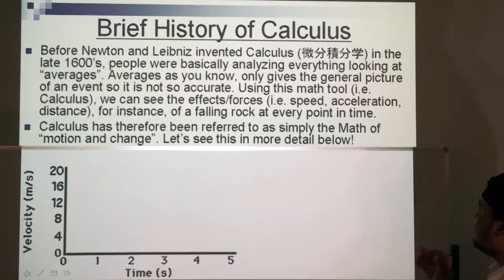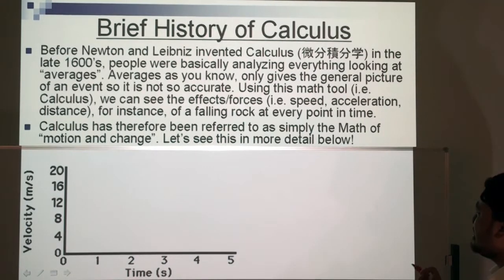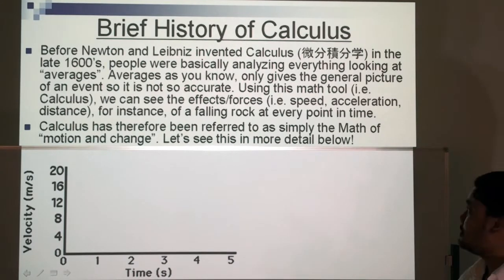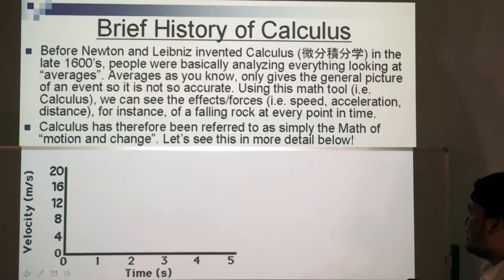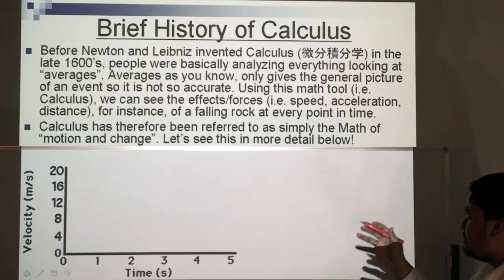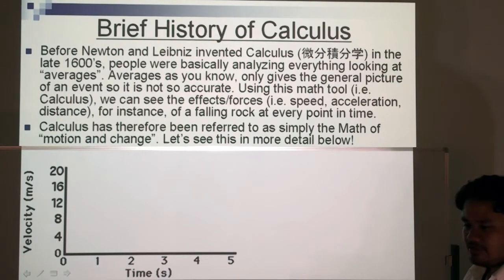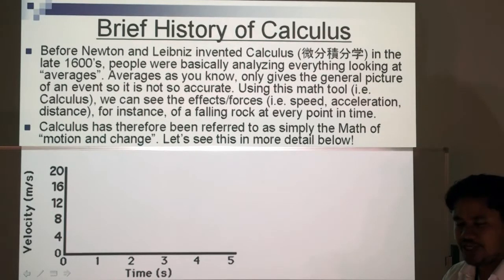Here's a brief history of calculus. Before Newton and Leibniz invented calculus in the late 1600s, people were basically analyzing everything by looking at averages. Averages only give us the general picture of an event, so they are not so accurate. Using calculus, we can see the effects or forces — for example, on speed, acceleration, or distance of a falling rock at every point in time. Calculus is therefore sometimes called the math of motion and change.